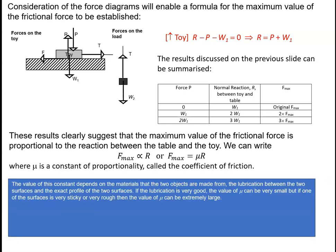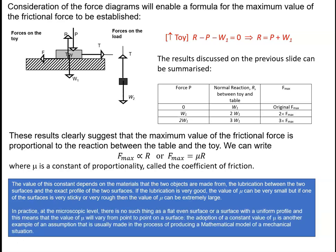The value of μ depends on the materials the two objects are made from, the lubrication between the two surfaces, and the exact profile of the surfaces. If the lubrication is very good, μ can be very small, but if one surface is very sticky or very rough, μ can be extremely large. In practice, at the microscopic level, there is no such thing as a flat, even surface, so μ will vary from point to point. Adopting a constant value of μ is an assumption made in the process of producing a mathematical model.